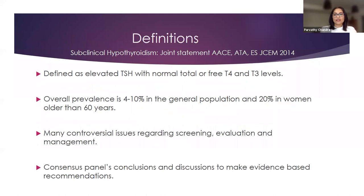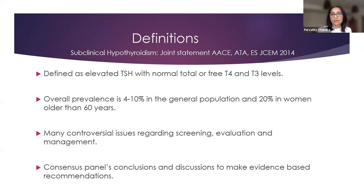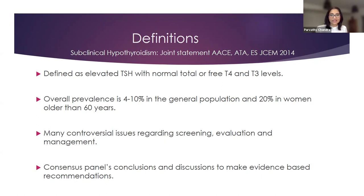The definition of subclinical hypothyroidism has been provided by a joint statement issued by the American Association of Clinical Endocrinologists, the American Thyroid Association, and the Endocrine Society, updated in JCEM in 2014. Subclinical hypothyroidism is first and foremost a biochemical diagnosis — not a clinical diagnosis — defined as elevated TSH with normal total or free T4 and T3 levels. The overall prevalence is estimated at 4–10% in the general population and about 20% in women older than 60 years.